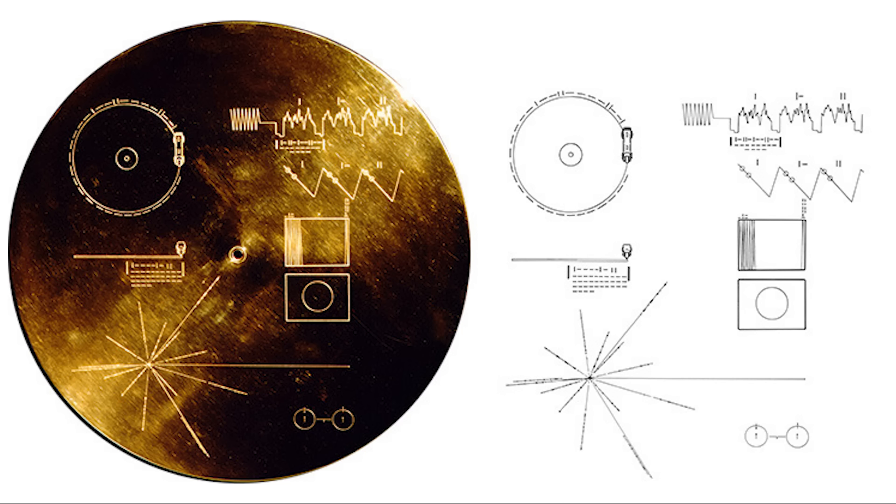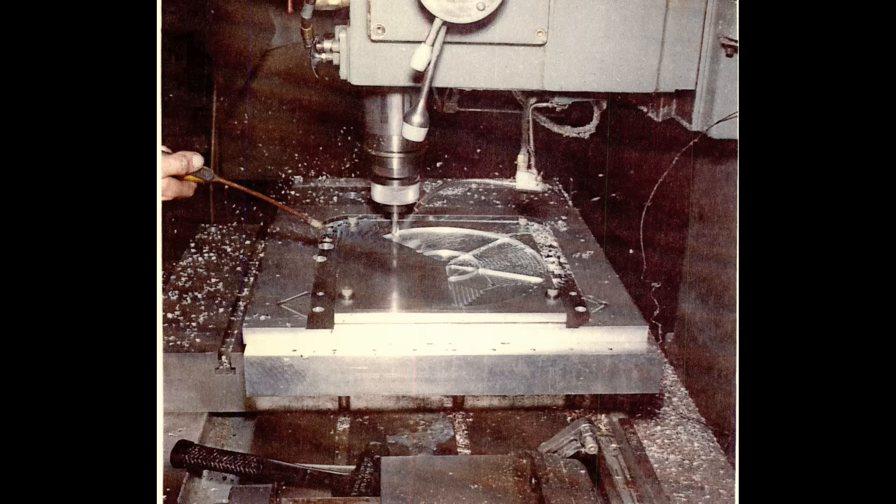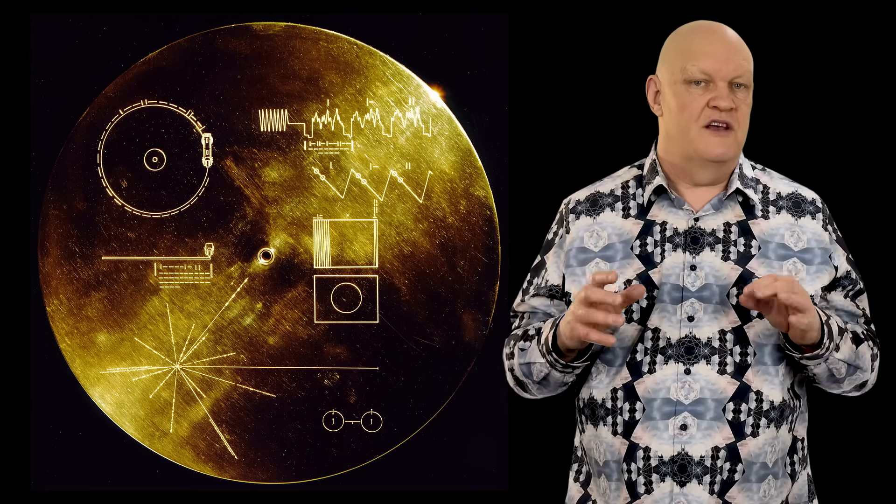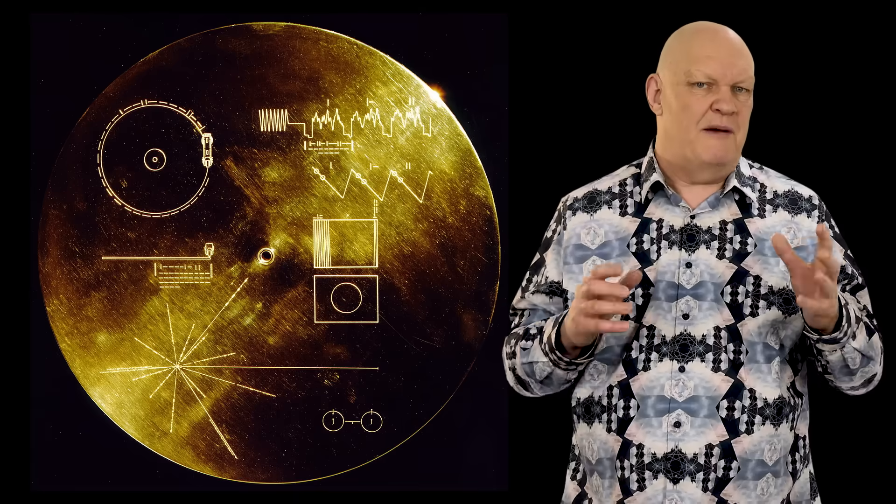So to combat this, they made a cover to protect the record and also to act as an infographic to show where the probe came from and how to play the record with the supplied stylus at the correct speed. The cover is made from aluminum, plated with an ultra-pure sample of uranium-238. The reason for this is twofold. Firstly, uranium is very dense and blocks X-rays, gamma rays and cosmic rays about 5 times more effectively than lead. And secondly, any advanced civilization that may find the Voyagers could use the ratio of the remaining uranium to other elements to determine the age of the record and the space probe itself.